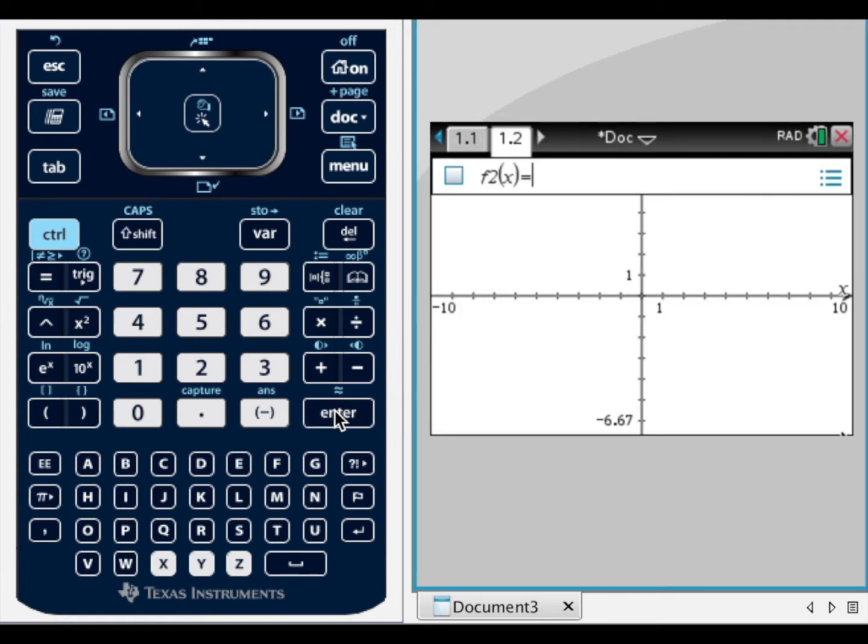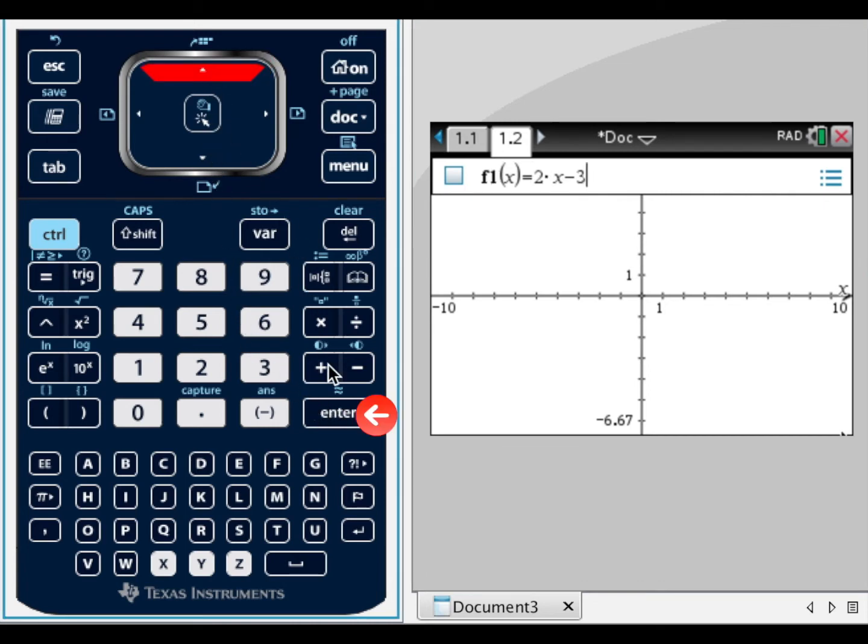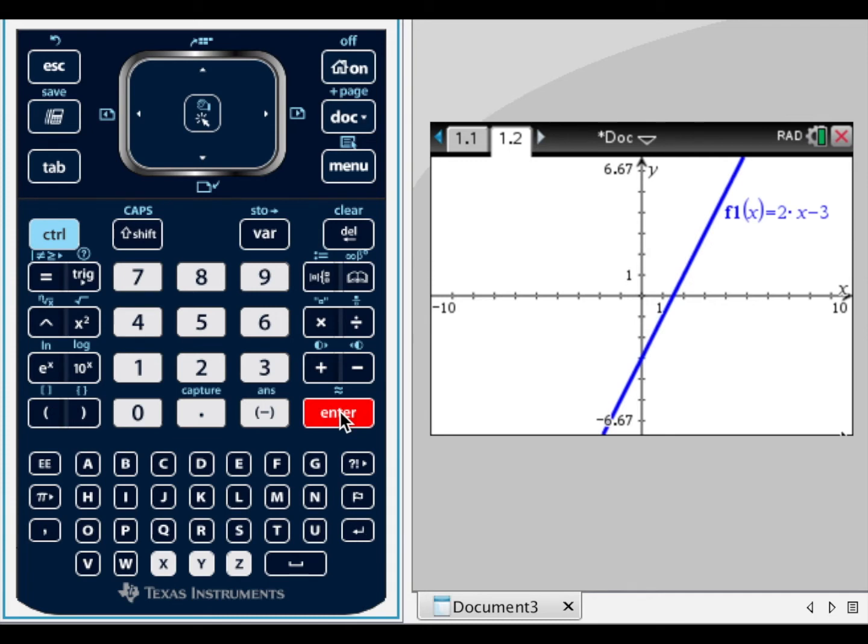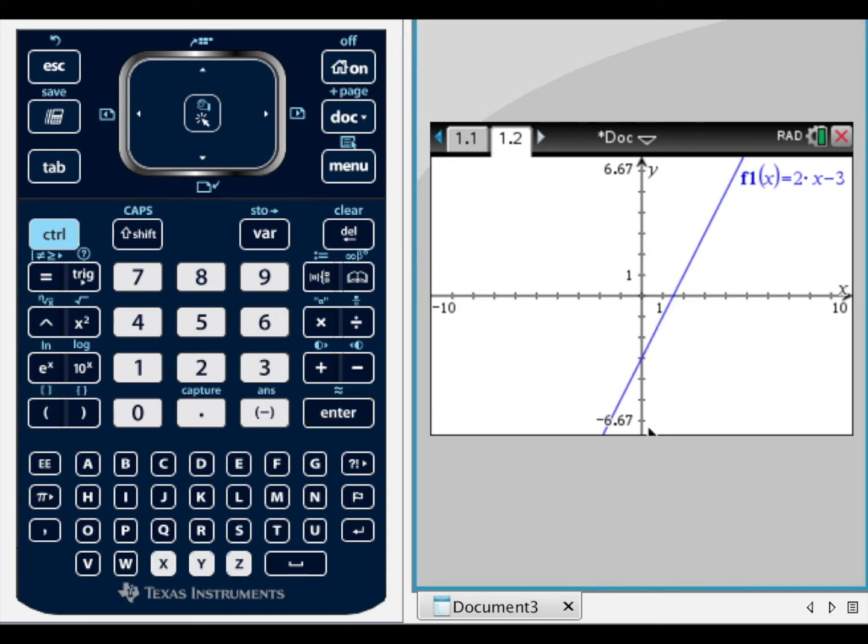We will find the point of intersection of our previous graph and a new graph, y equals minus a half x minus 1. To access the first graph, hit the up arrow and enter. The previous graph, the graph of f1x, is drawn on our screen.